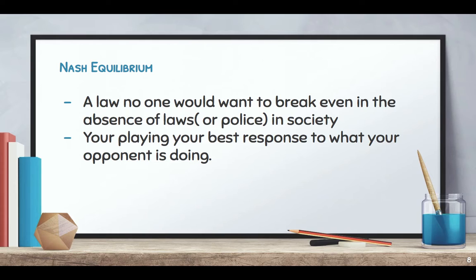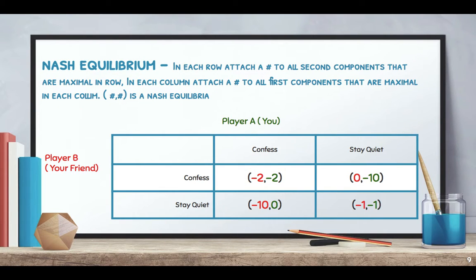Here's another way to think about it: it's a law that no one would want to break even in the absence of laws or police and society. In other words, you're playing your best response to what your opponent is doing. To find it: in each row, attach a dash to all second components that are maximal in the row. In each column, attach a dash to all first components that are maximal in the column. The entries with two dashes represent the Nash Equilibrium — the optimal solution.